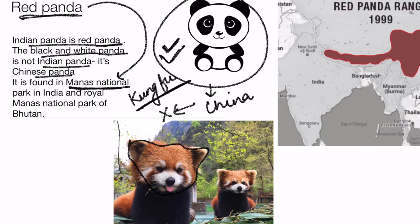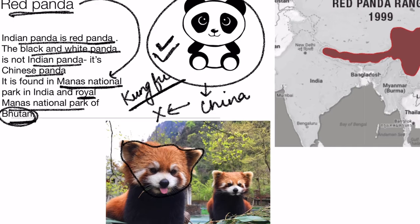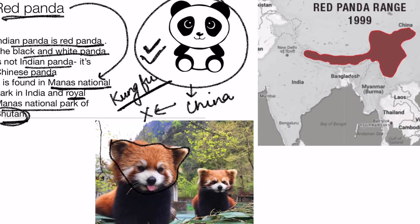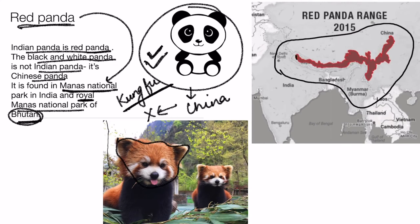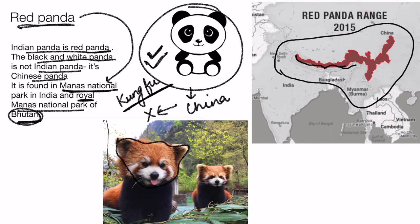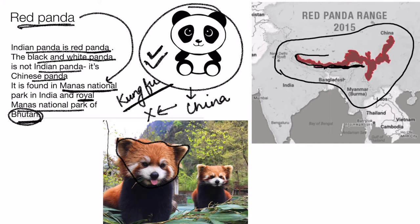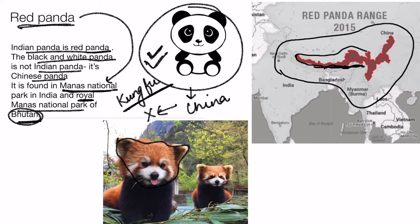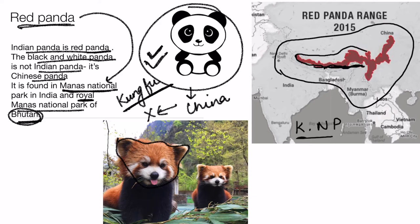The red panda is found in Manas National Park and Royal Manas National Park, which is in Bhutan. Looking at its location, it is found in Nepal, Bhutan, and the Arunachal Pradesh and Assam area. So we can safely conclude that Kanchenjunga National Park also has red pandas, and Manas National Park has red pandas too.